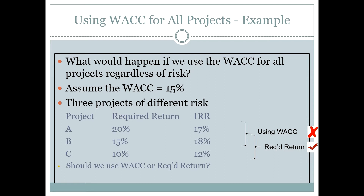Using WACC caused us to reject a good, albeit low-return project. Because we're using the average, and only taking on projects with returns higher than average, and projects with high returns by definition have high risk, we are only biasing the firm towards taking high-risk, high-return projects.